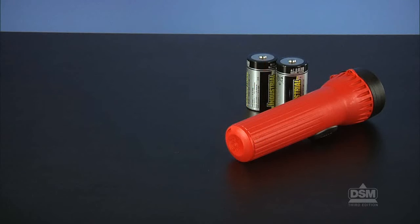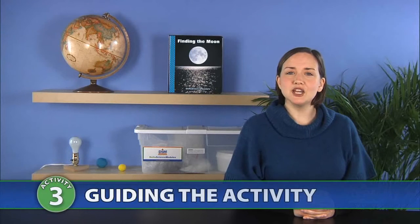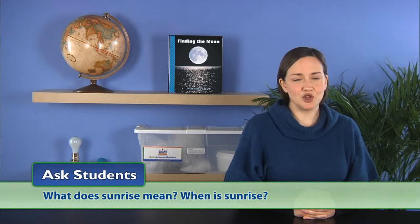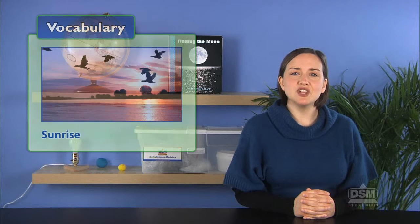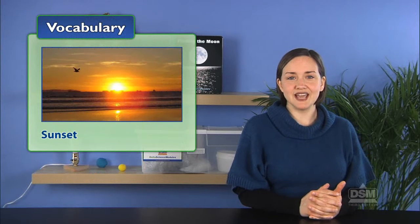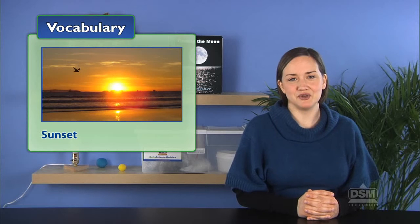You will need a flashlight with batteries, a timer or clock, a roll of tape, and a marker. To begin Session 1, ask students: What does sunrise mean? When is sunrise? Then ask: What does sunset mean? When is sunset? Explain that sunrise is the appearance of the sun above the horizon, marking the start of daylight hours, and that sunset is the disappearance of the sun below the horizon, marking the start of the nighttime hours.